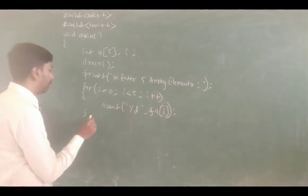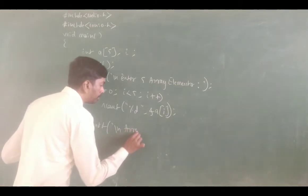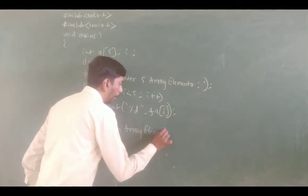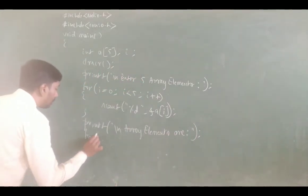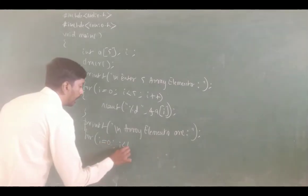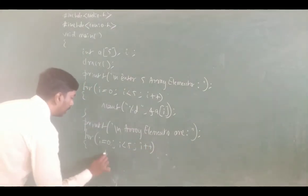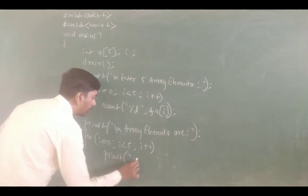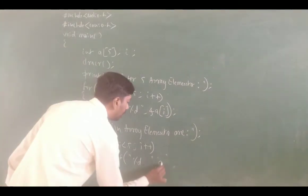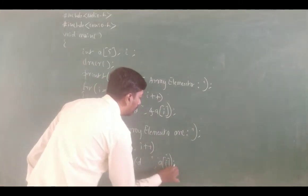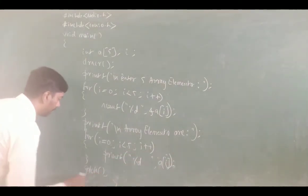Next, for display, we use printf 'array elements are'. Then again a for loop: for i equals 0, i less than 5, i++. Inside, printf %d with A of i — as i value repeats, each element is displayed. Finally, close the main function.